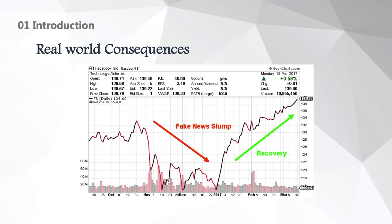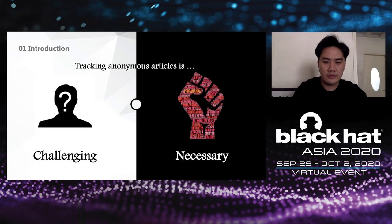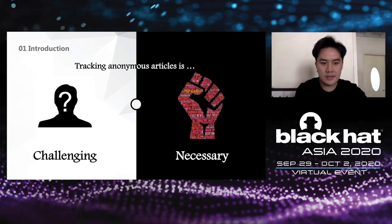In the past few years, some well-known companies have suffered from online short attacks, and you can see from the graph that the stock price dropped sharply due to those short attacks. Moreover, some attackers fabricate fake news about social influencers so that they can ask for money. Therefore, to protect and maintain personal reputation, brand images, and a healthy cyberspace, it is necessary to track the source of the fake news.